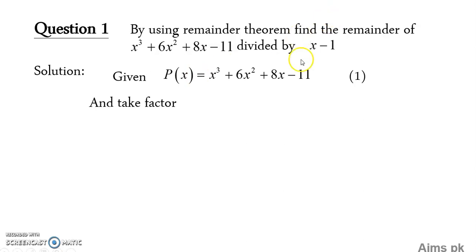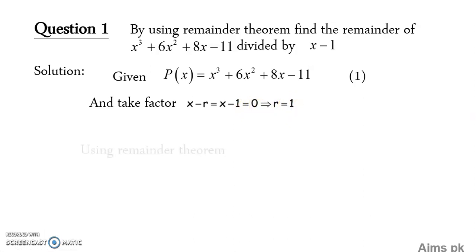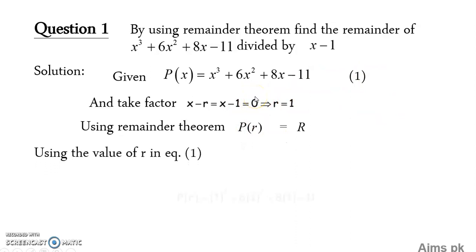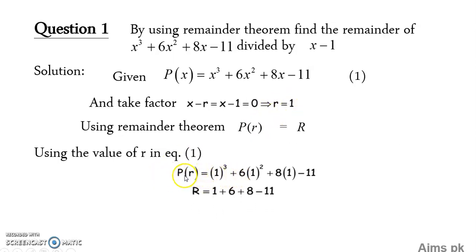In the next step, take the factor given in the question. The factor is (x minus 1). As established in the proof of the Remainder Theorem, you must equate your factor to 0. So, x minus 1 equals 0, which gives us r equals 1, because shifting minus 1 to the other side makes it plus 1. Now, substituting x equals r equals 1 into the polynomial — the statement says P(r) equals R — so instead of x, we put in the value r equals 1.